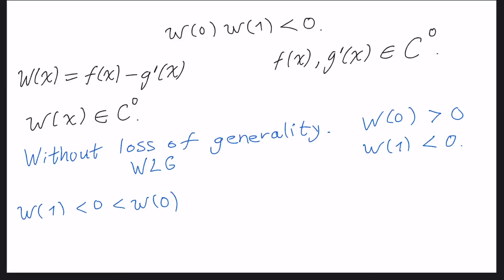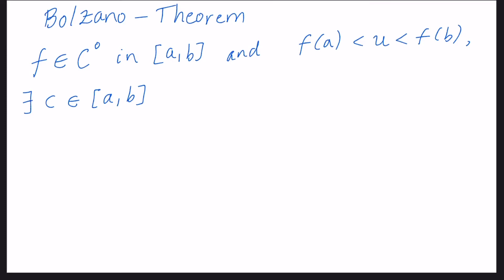What do we know from the Bolzano theorem? We will recall the Bolzano theorem. Bolzano theorem is an important theorem from differential calculus that says that if we have f as a continuous function in [a,b], and if f(a) is less than u, less than f(b), then exists c that belongs to the interval, closed interval [a,b], such that f(c) is equal to u.